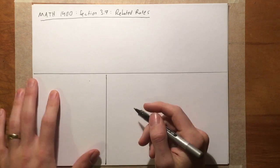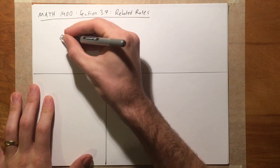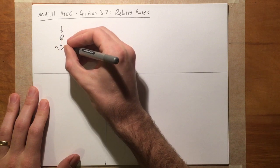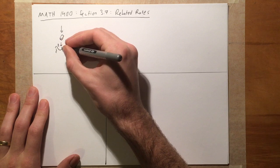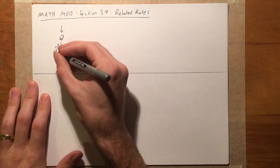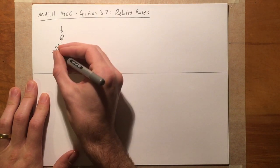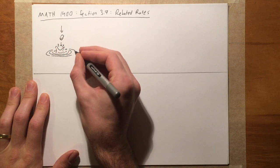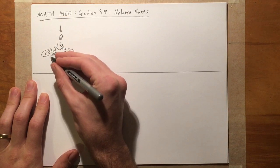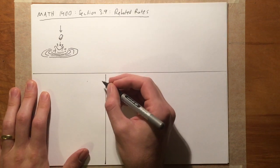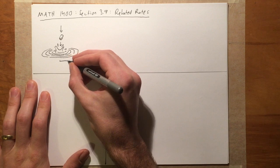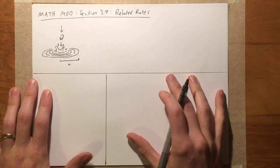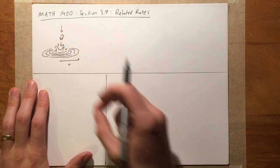Let's suppose you take a rock and drop it into a pond — it makes a big splash, and that causes ripples to radiate outwards. As the ripples radiate outward, the radius of those ripples increases at a constant rate. We'll ask: if the radius is increasing at a constant rate, what is the corresponding rate of change in the circumference of those circular ripples, and what is the rate of change in the area enclosed by the circle?